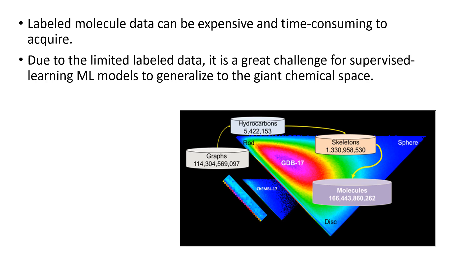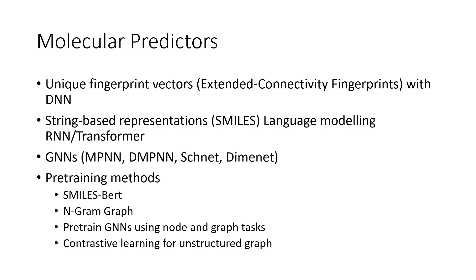But acquiring labeled molecular data is a very costly operation. Because of the scarcity of labeled data, it has been a great challenge to create supervised learning methods that can generalize effectively across the vast chemical space. There are several ways to represent molecules, such as fingerprint vectors, SMILES, and chemical graphs. Chemical graph neural networks outperform the rest of the approaches in preserving chemical structural information, which you can use for chemical property prediction.